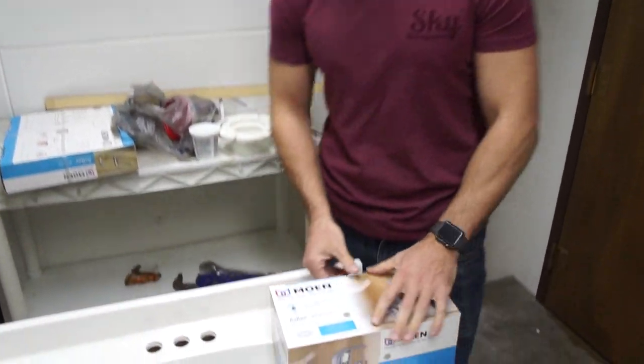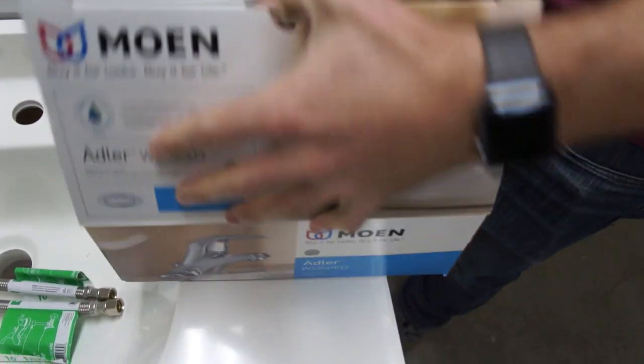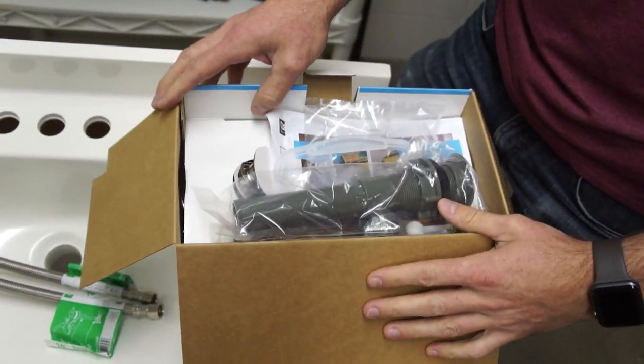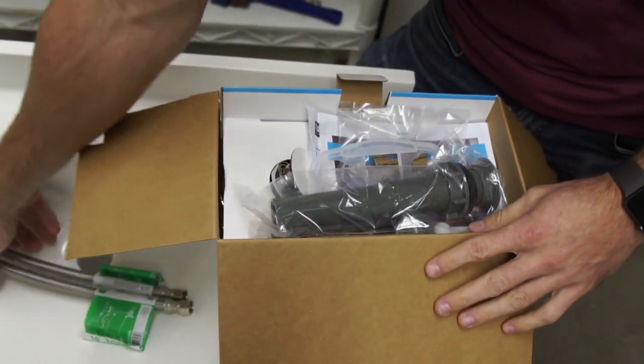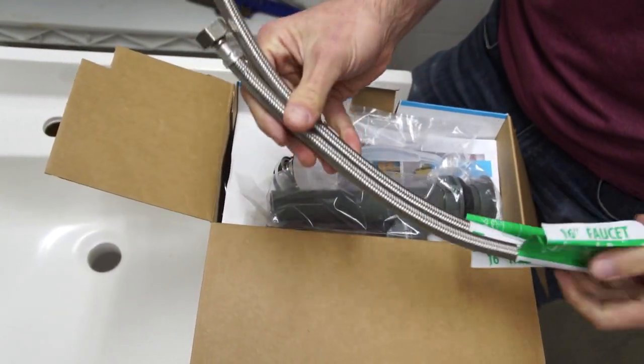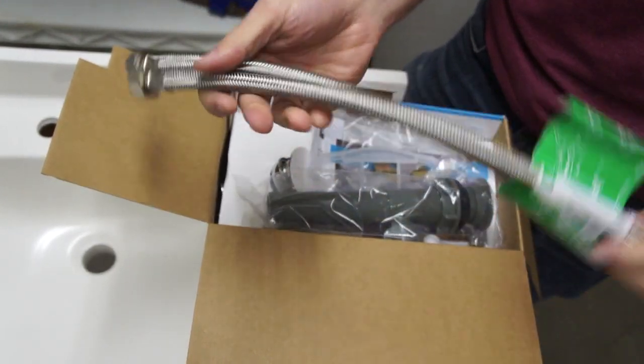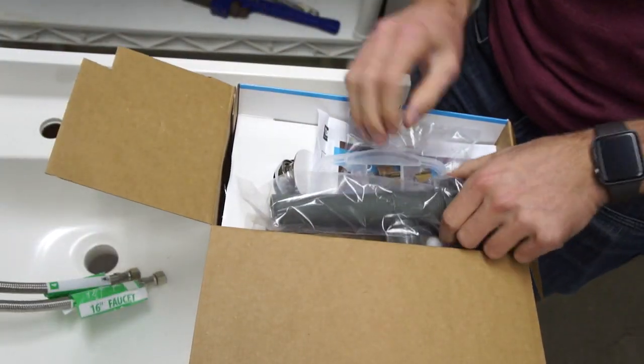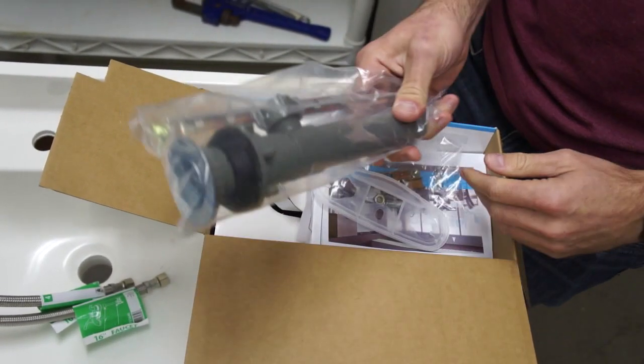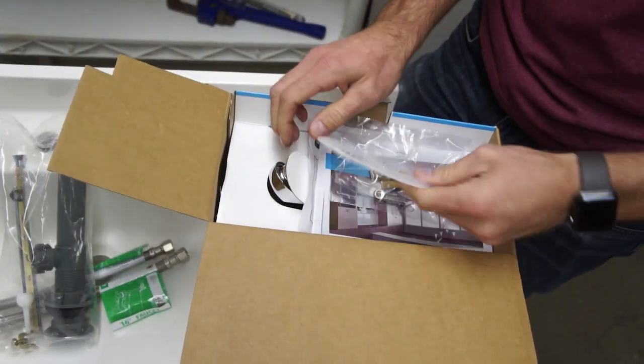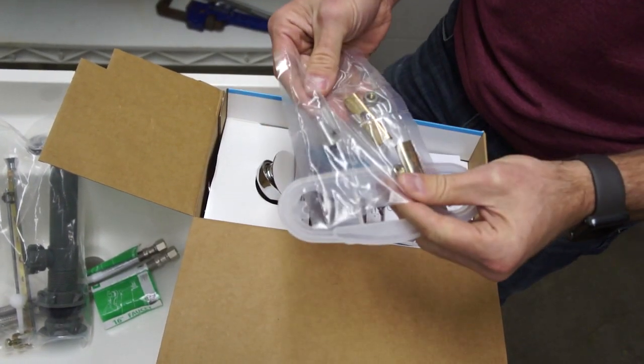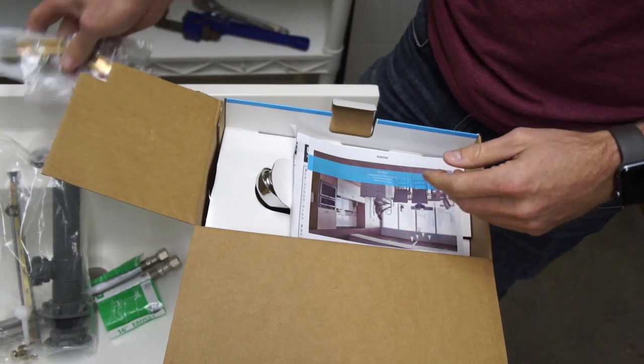So let's open it up. The faucet comes with everything you're going to need to install it on your bathroom sink with the exception of the connections that go to the water shutoff. So you have to buy those separately depending on the length that you need. The drain assembly, we'll be talking about putting that on too.